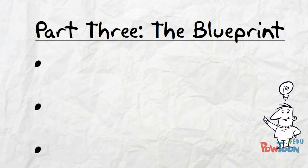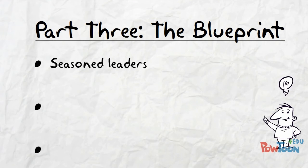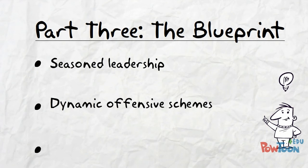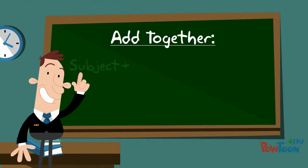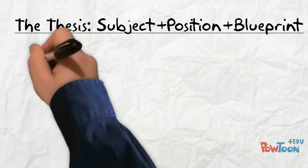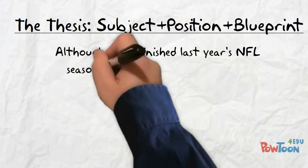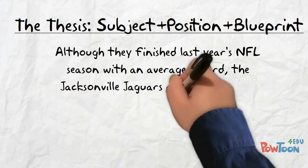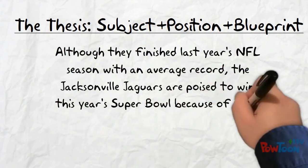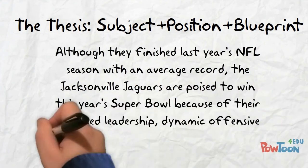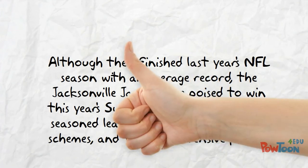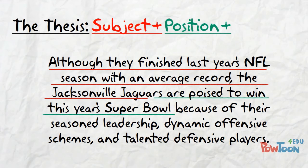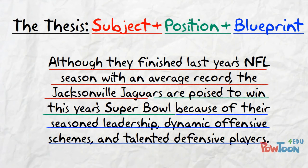Why will the Jacksonville Jaguars win the Super Bowl? After some more thought and writing, let's say you think that the Jags' greatest strengths this year are their seasoned leadership, dynamic offensive schemes, and talented defensive players. Now add everything together — subject plus position plus blueprint: "Although they finished last year's NFL season with an average record, the Jacksonville Jaguars are poised to win this year's Super Bowl because of their seasoned leadership, dynamic offensive schemes, and talented defensive players." Wow — now that is a rocking thesis statement. Subject plus position plus blueprint makes a solid thesis.